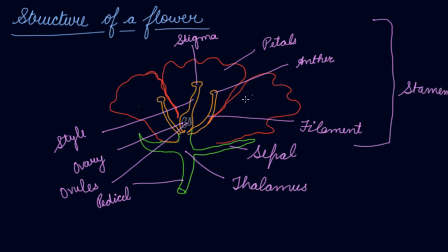If you remove the petals, this part is known as the stamen — these are the main parts of the flower. Each stamen consists of a thin stalk called the filament. At the top of the filament is a bag-like head called the anther. The anther contains pollen grains, which are fine dust-like particles that take part in reproduction.